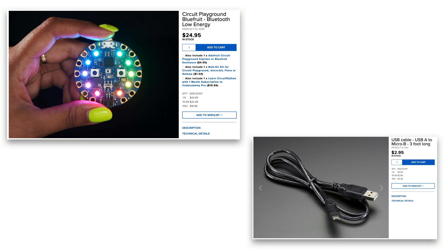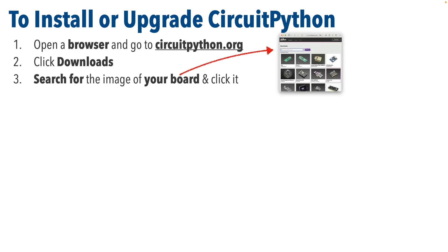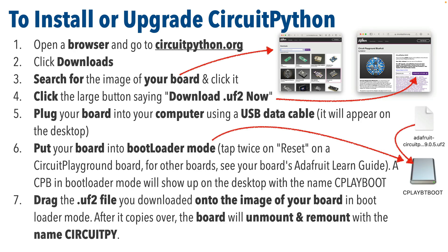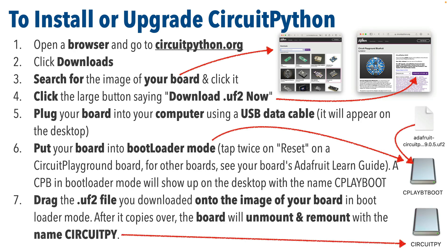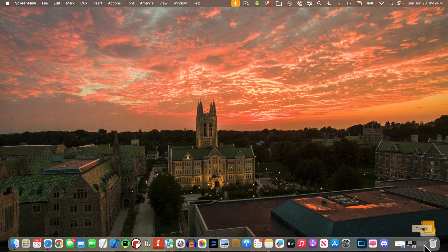The first thing we're going to do is make sure that our board is running the very latest version of CircuitPython. If you have a new board, these steps will put CircuitPython on the board, and if your board already has CircuitPython installed, these steps will make sure that you've upgraded to the latest version. So to do this, open a browser and head to CircuitPython.org.